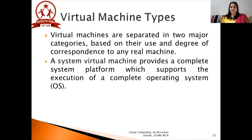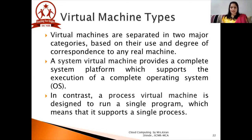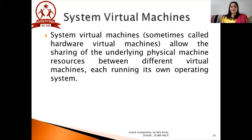If you remember from my last video lecture, we discussed full virtualization and para virtualization. The system virtual machine can be viewed as a type of full virtualization. In contrast, a process virtual machine, or PVM, is designed to run a single program — it only supports a single process — whereas SVM provides a complete system platform. SVM, sometimes called hardware virtual machine or HVM, allows sharing of the underlying physical machine resources between different virtual machines.